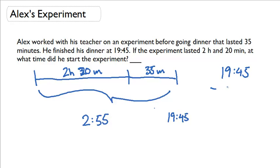19:45 minus 2:55. Borrow an hour. And I get 50. And 18 minus 2 is 16.